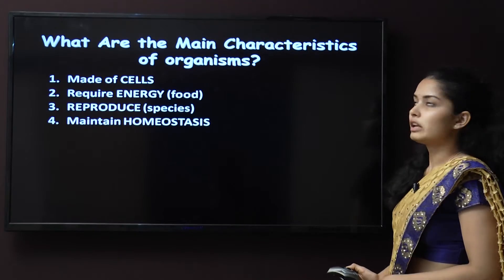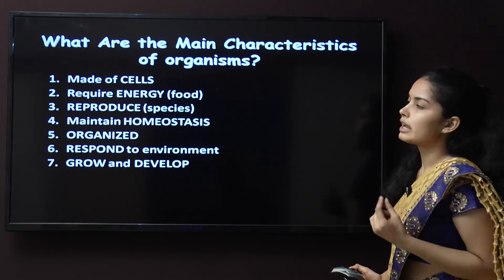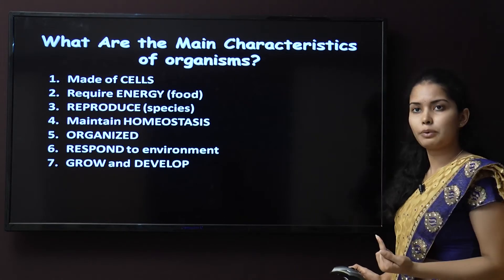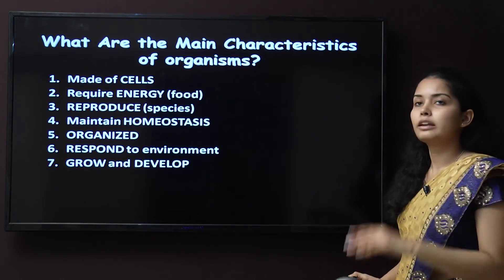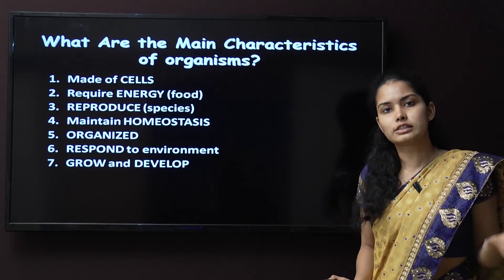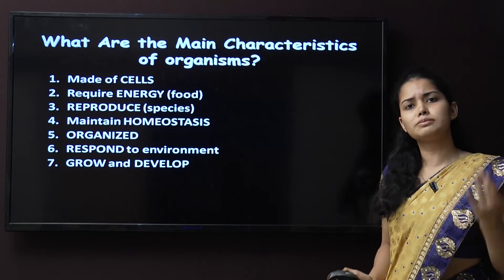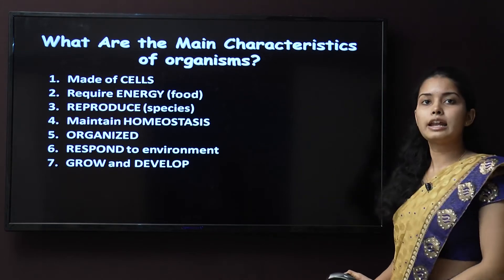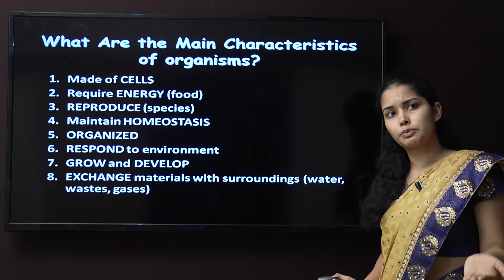Now let us review the facts about living organisms. The main characteristics of an organism are: they are all made up of cells according to the cell theory; they require energy in the form of food; they reproduce — species produce their own offspring; they maintain homeostasis, which means a balanced condition with the environment; and they are organized, with a very organized system of organ systems and tissues. They also respond to the environment.